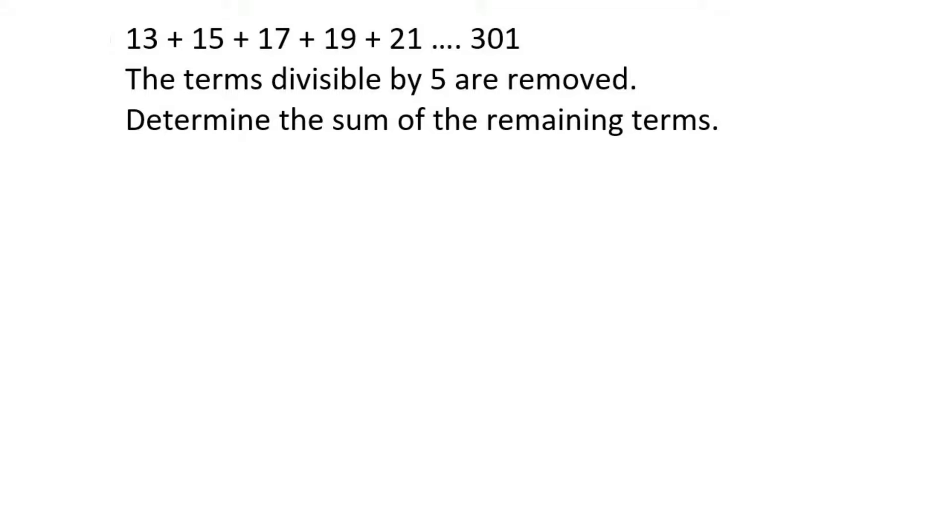So they're saying that all the terms that are divisible by 5 are going to be removed. Determine the sum of the remaining terms. So we've got this long sequence over here that goes all the way up to 301. And they want to know what is the sum of all the remaining terms once you remove the divisible by 5s.